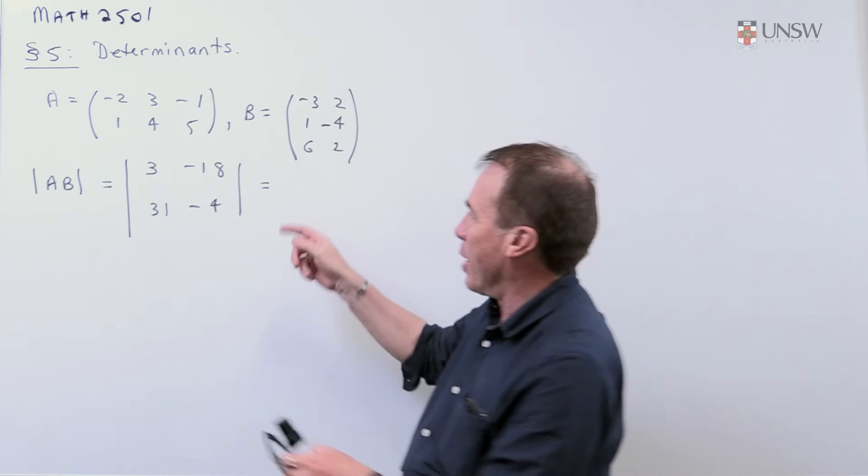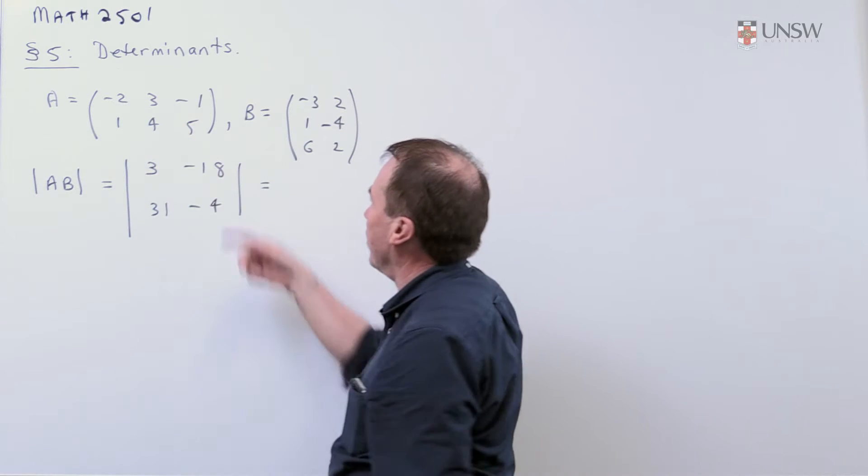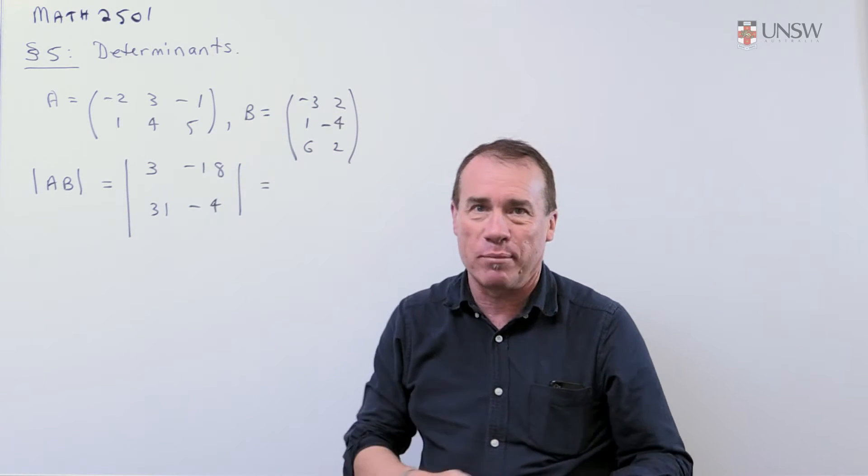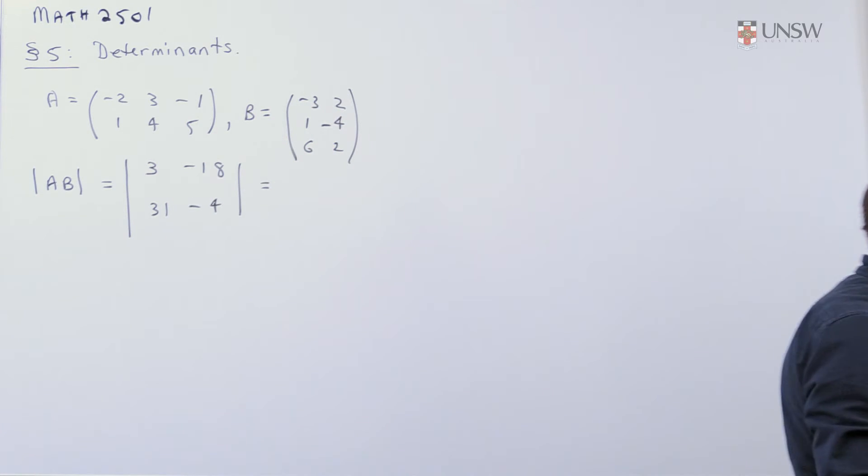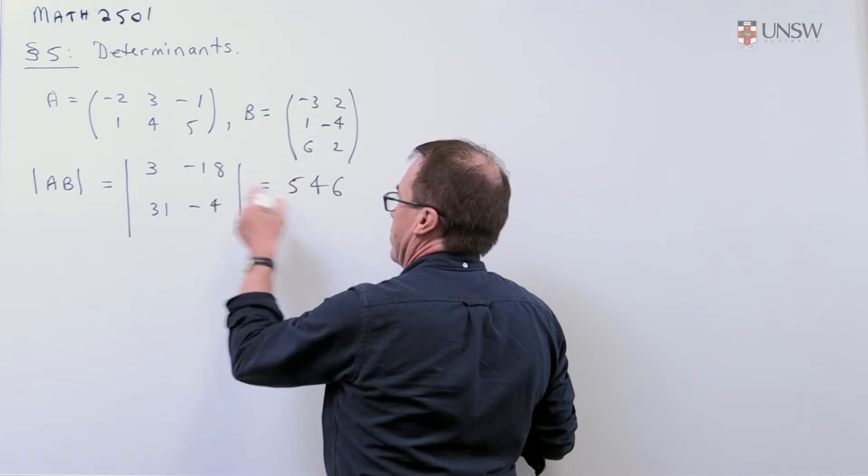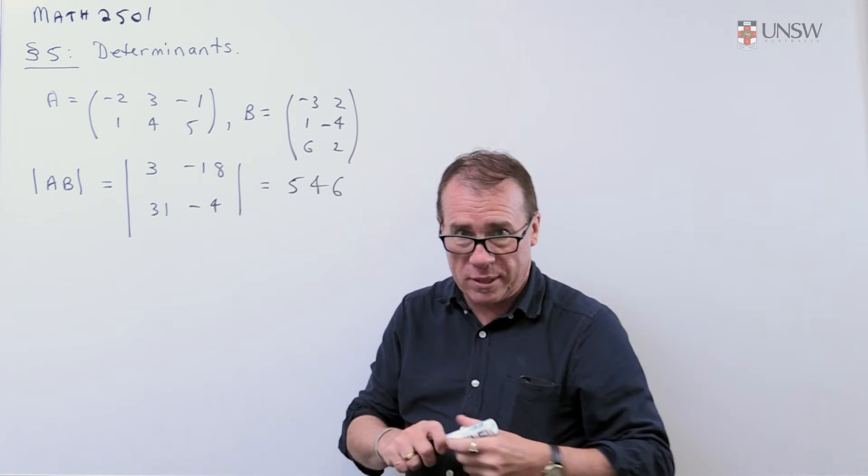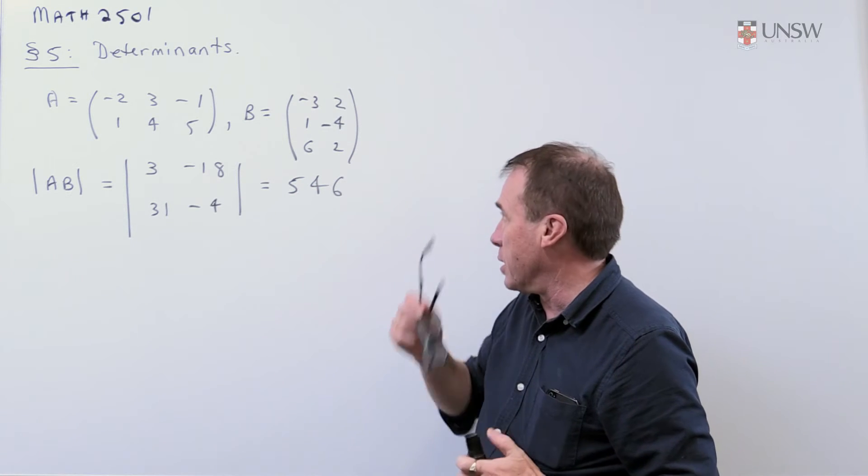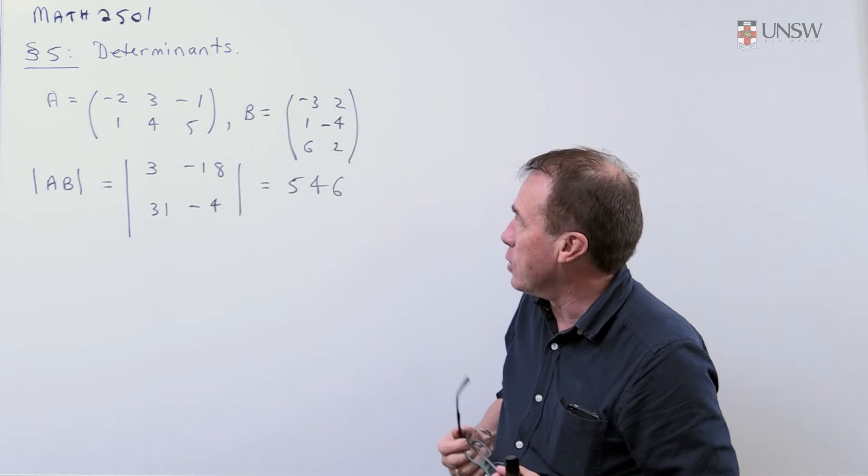Okay, so I multiply out, I won't do all the arithmetic, you multiply A times B, you get that matrix. And then you get the determinant of that, which turns out to be 546. So I just do that times that minus that times that. So that's easy. That was just to show that you can get the determinant of AB.